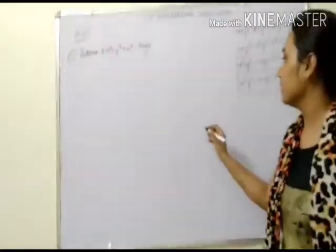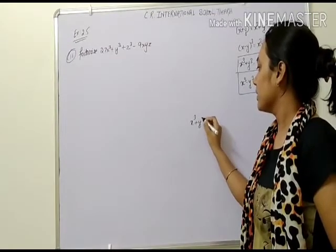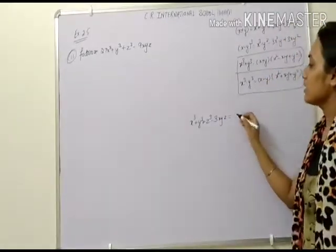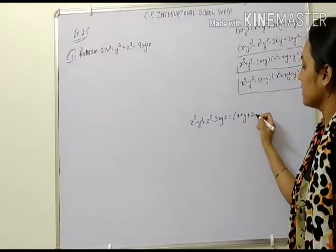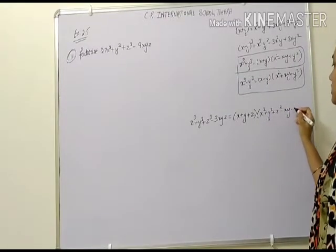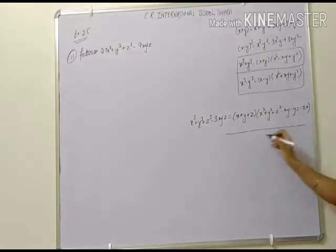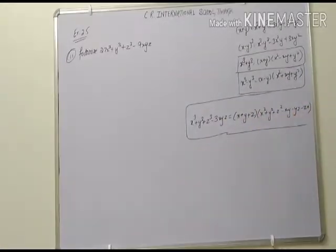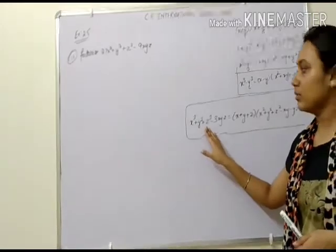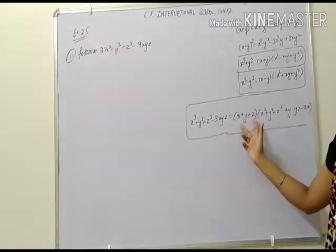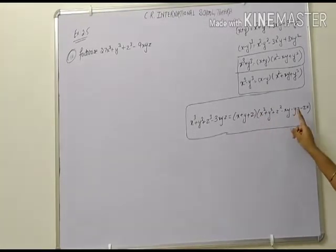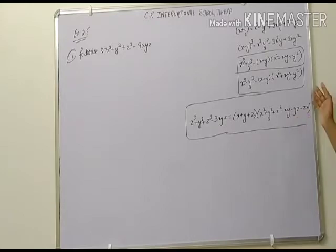For the next question, first let us recall a formula: x cubed plus y cubed plus z cubed minus 3xyz equals x plus y plus z, into x squared plus y squared plus z squared minus xy minus yz minus zx. This is your new formula.